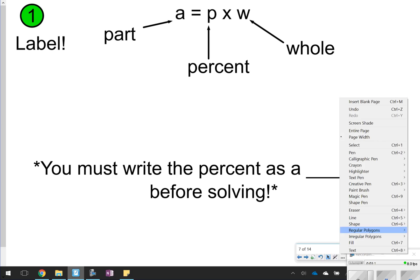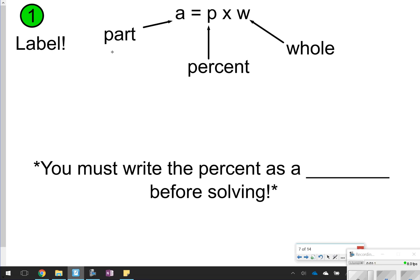Another way that will help you possibly remember this: A, the part, is also is; the percent, obviously, is your percent; and W is represented by the word whole of. Before you start solving this, you also need to write the percent as a decimal before you begin solving. If you're solving for the percent, you just need to change that decimal answer back to a percent.